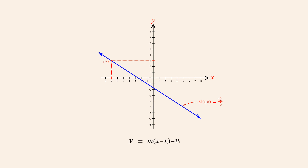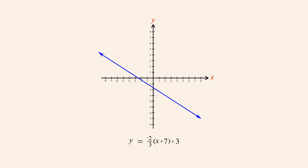Using the point-slope form, we set the value of m to the slope, negative two-thirds, and the value of x1 and y1 to the coordinates of the known point, negative seven and three. This equation can be simplified — instead of subtracting negative seven, we add positive seven. The equation for this line is now written in point-slope form.